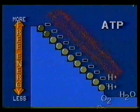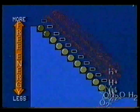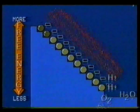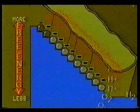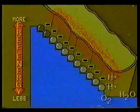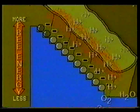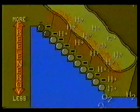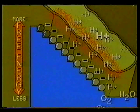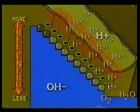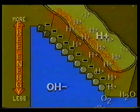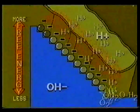Just how the ATP is formed is still a subject of controversy. The most popular theory focuses on the inner membrane of the cristae. Electron transport energy is thought to pump hydrogen ions across the membrane. The result is a concentration of hydrogen ions on one side of the membrane and hydroxyl ions on the other. This differential represents potential free energy, which is then exploited chemically to produce ATP.